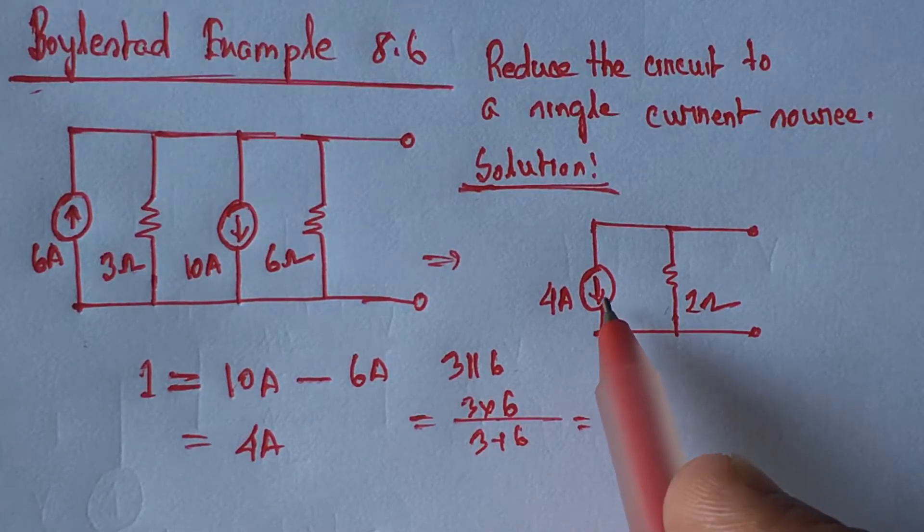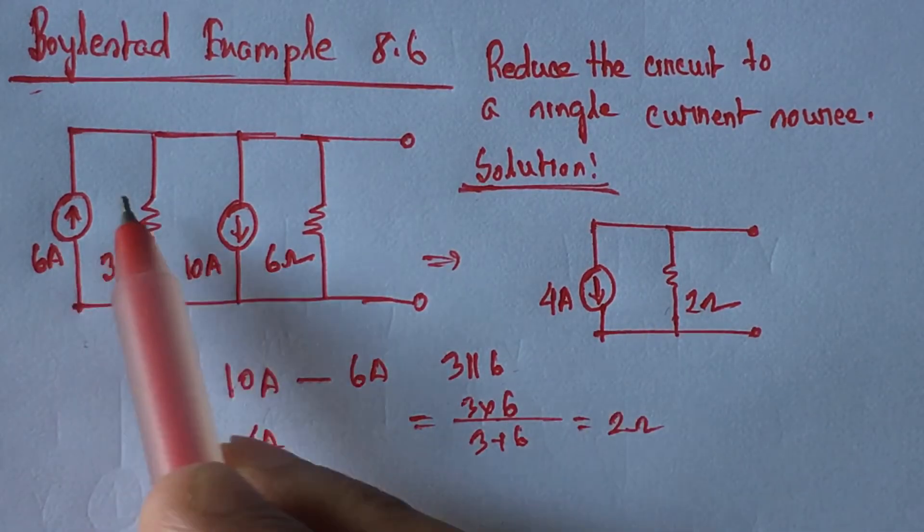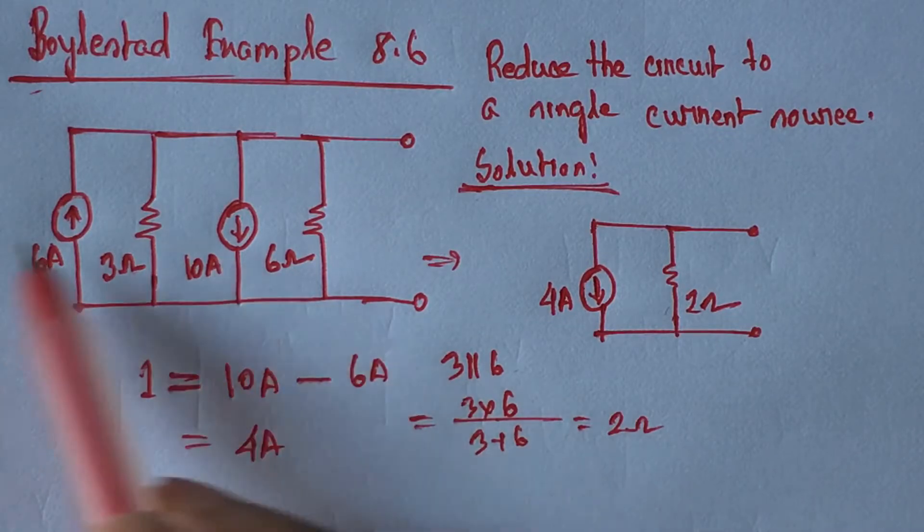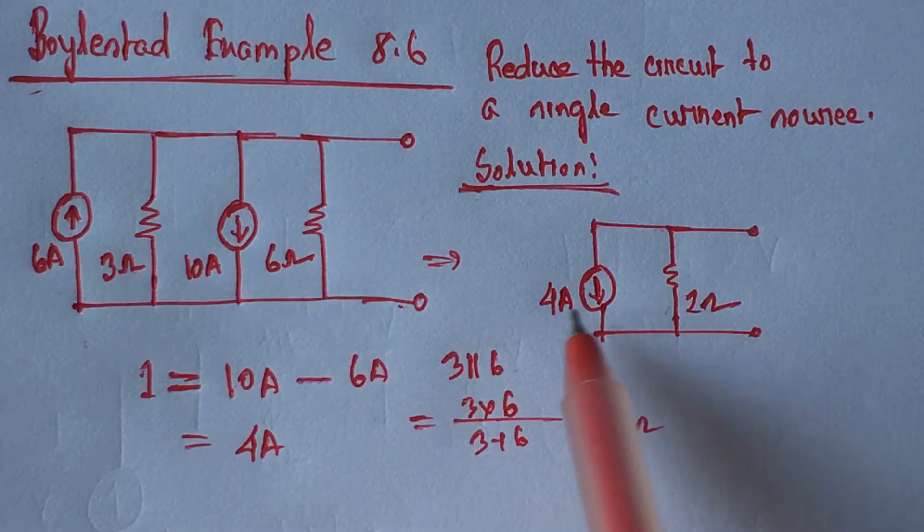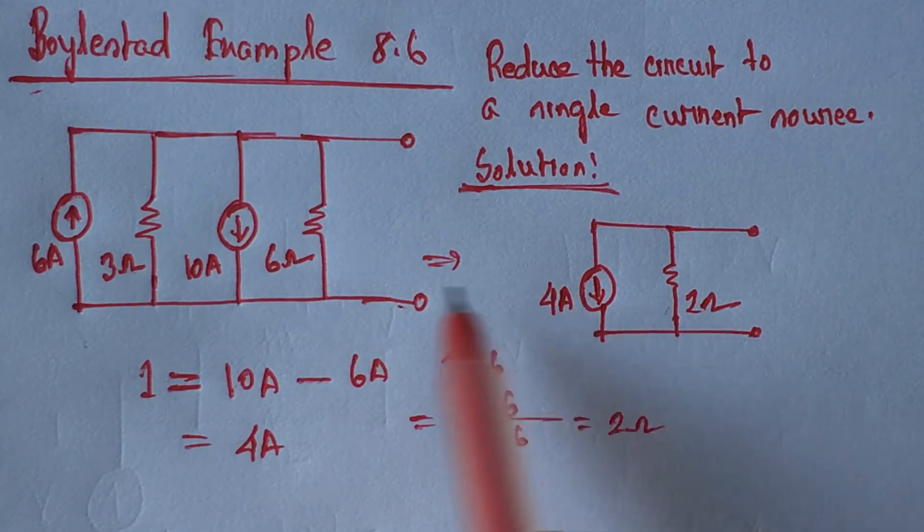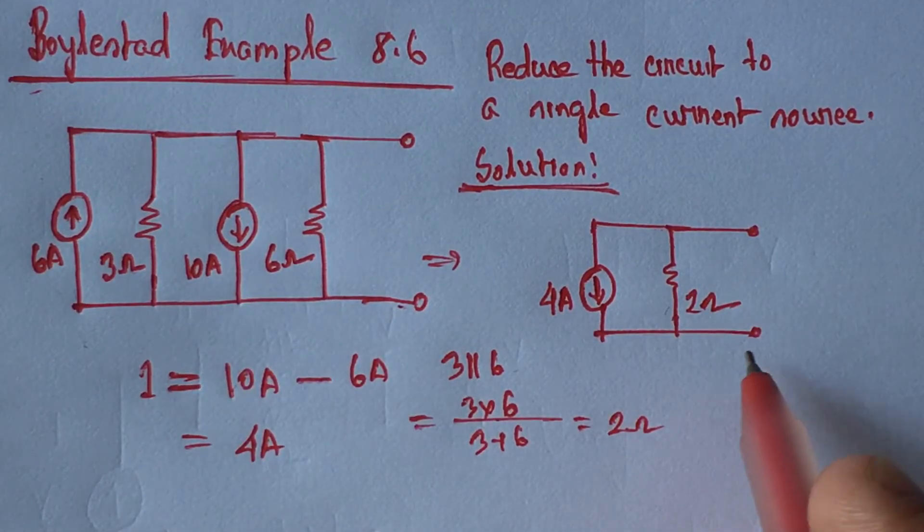Why is the direction of this current downward? This is because the maximum current value is 10 ampere, and after subtraction, this current is prevailing. So the 4 ampere current has the direction going downward like the 10 ampere current. This is the final circuit.